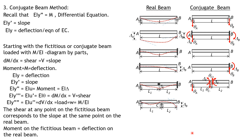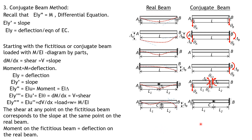For the next case: A is free, so it becomes fixed in the conjugate beam. B is a roller end-support, so it remains a roller. At C, there is no deflection but there is rotation, so it is represented by an interior hinge — providing shear resistance but no moment resistance. So A is fixed, C is an interior hinge, and B remains a roller.